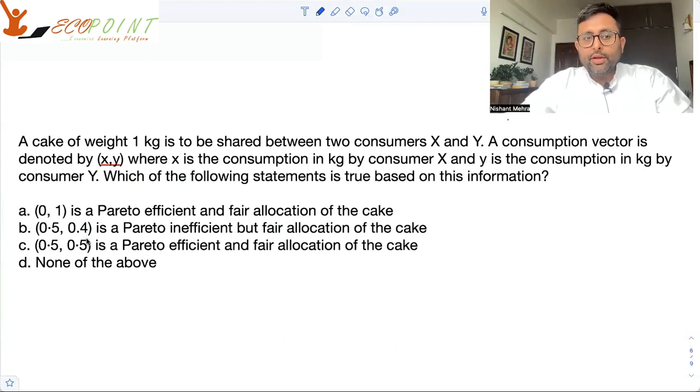Is this Pareto inefficient and fair allocation of the cake? What about Pareto inefficiency? I have half of the cake and you have 0.4 of the cake. We already have one unit of cake. We can make you better by just giving you that unit. So there is a Pareto superior allocation which is there. This is not even a feasible allocation. 0.5, 0.4. There is something left out. We can make you better off without decreasing anyone. So I do not have to touch my half cake.